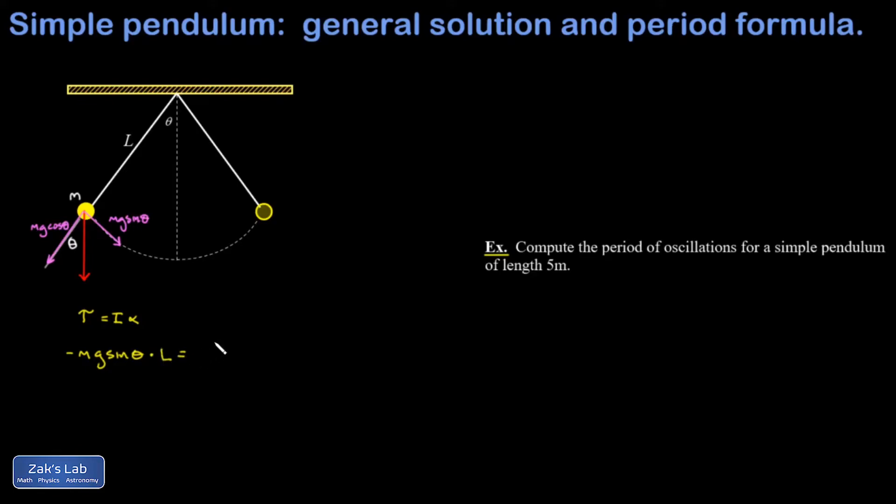And then I have to use the formula for the moment of inertia of a point mass, which is mr squared, but our distance to the rotation axis in this picture is L, so ml squared times the angular acceleration alpha.